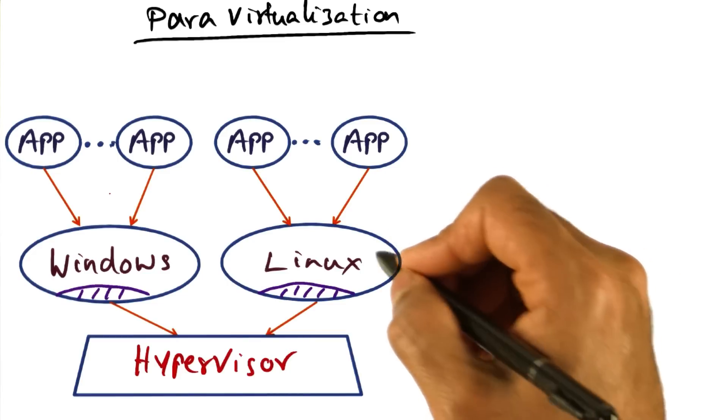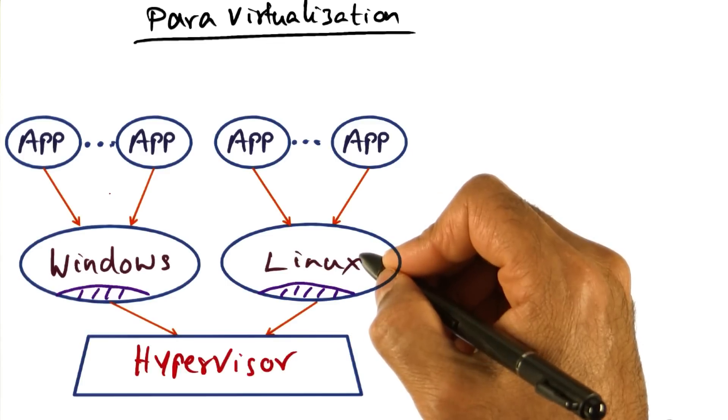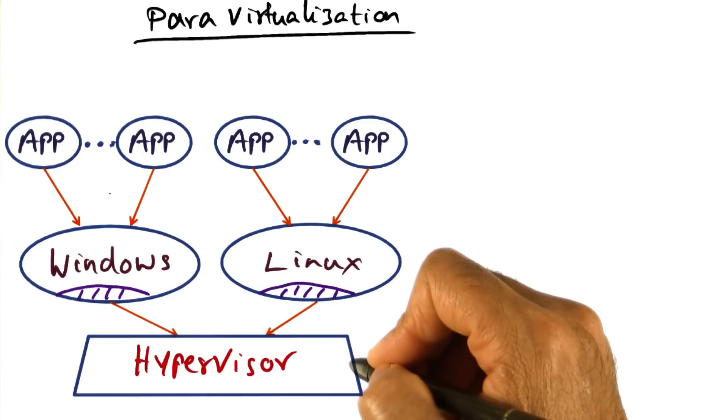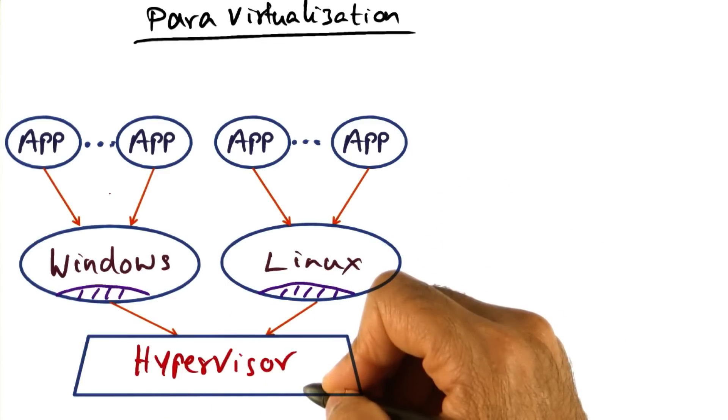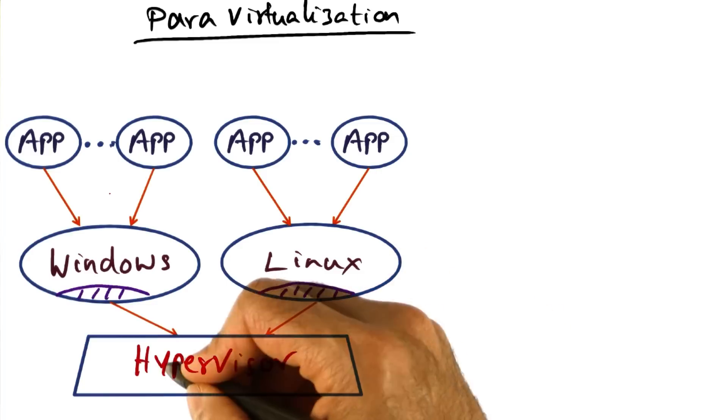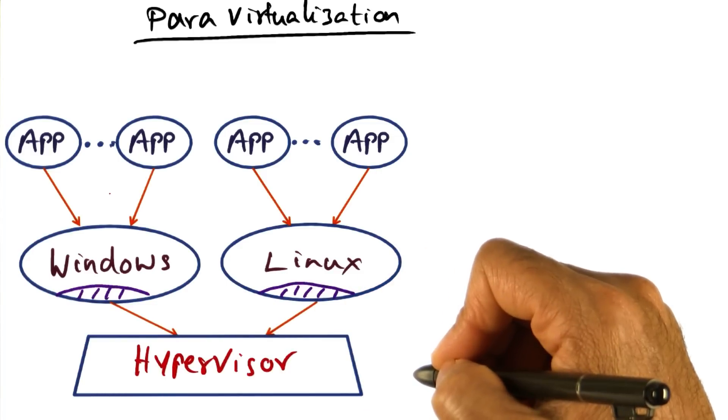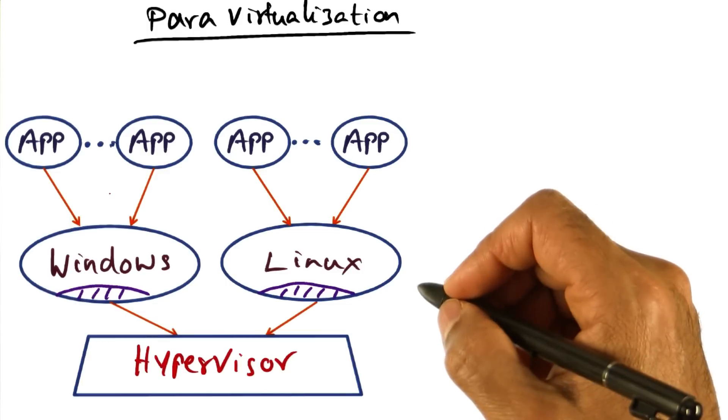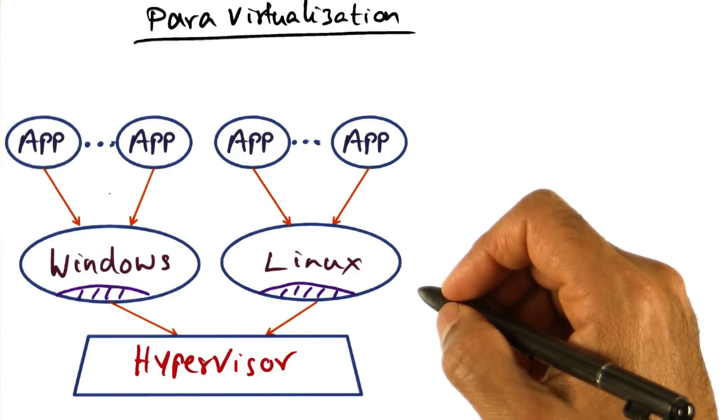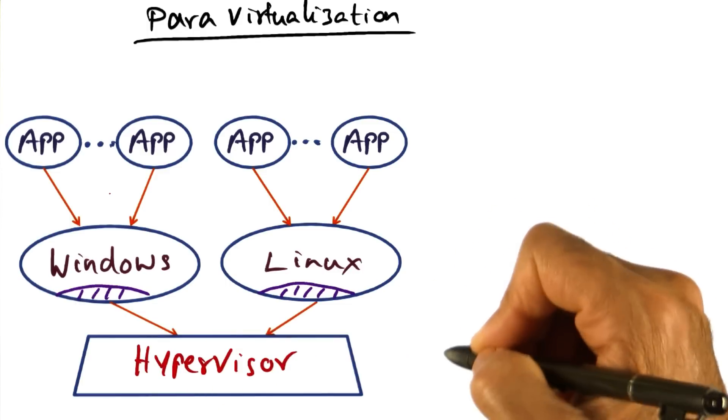For instance, letting the guest operating system see real hardware resources underneath the hypervisor, and also being able to employ tricks such as page coloring, exploiting the characteristics of the underlying hardware.